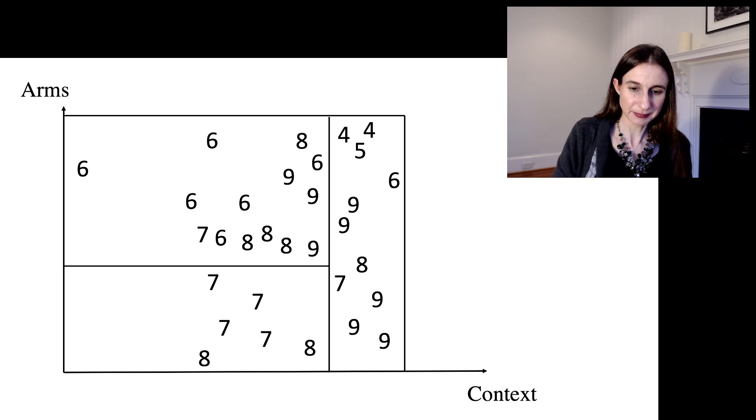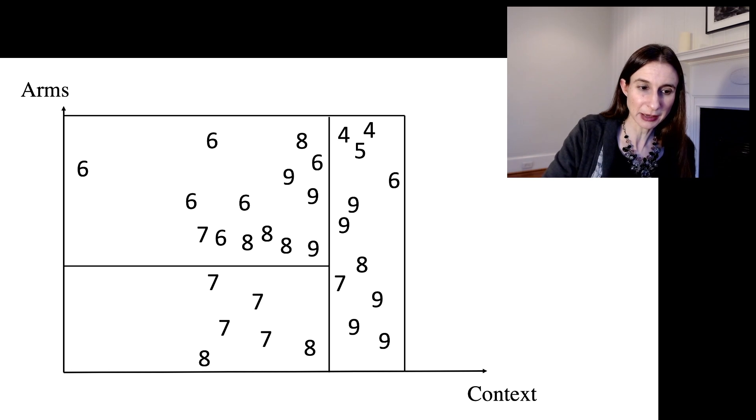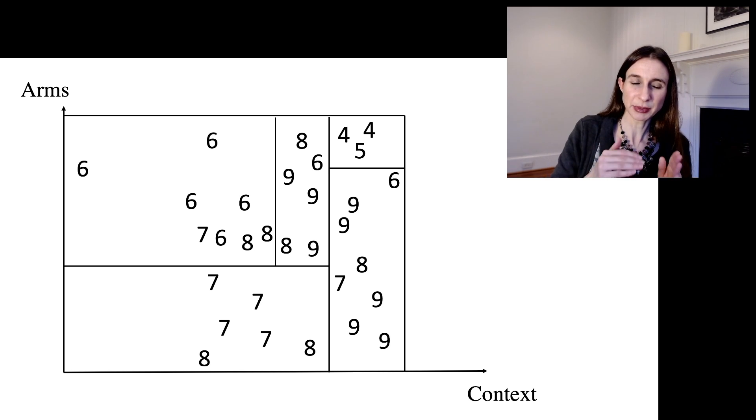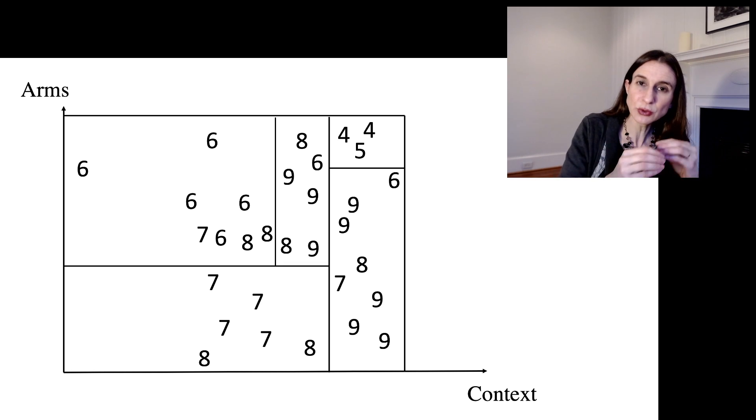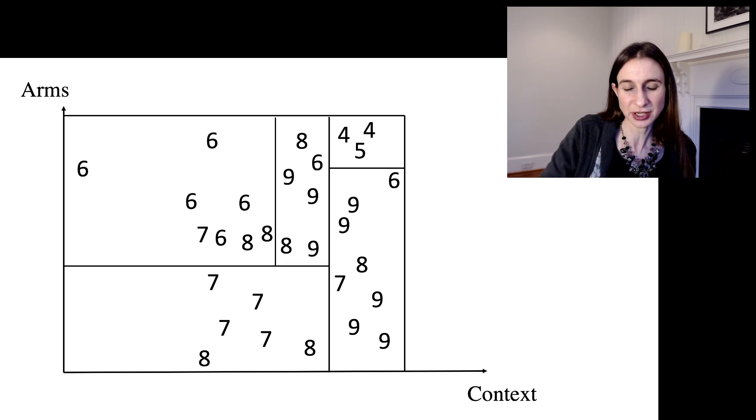And from here, again, I re-estimate the mean and the upper confidence bound in each bin, and if I have enough points that I learn something about the bin, I may be able to subdivide the partition so I can get finer and finer partition bins, so I can zoom in on what's the best arm for each context.